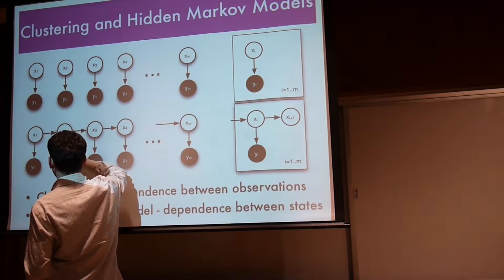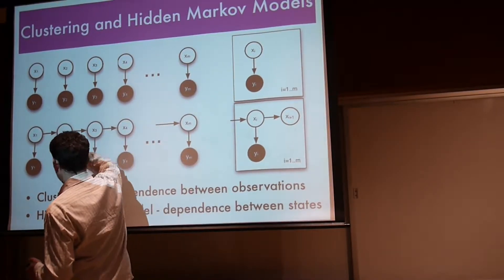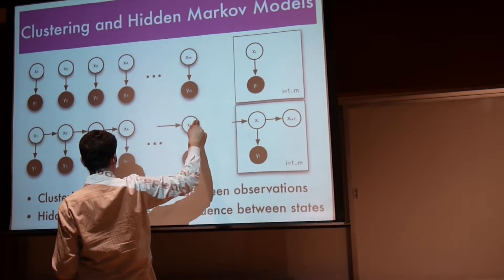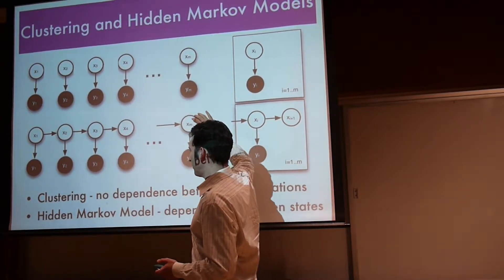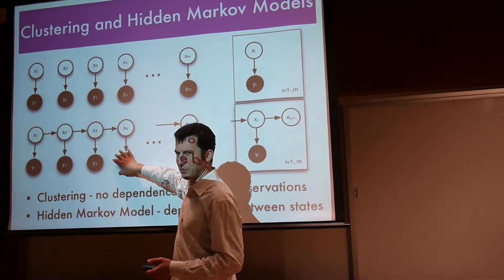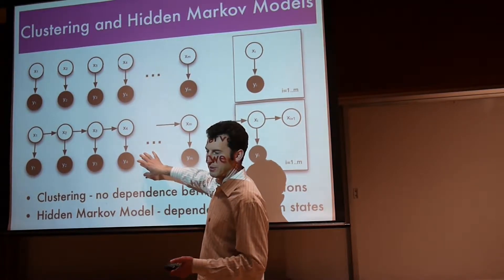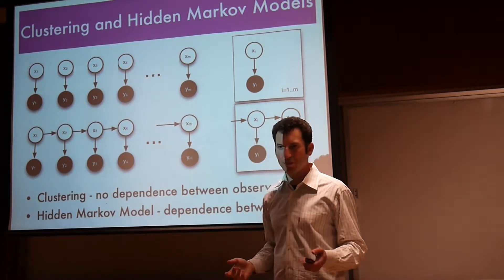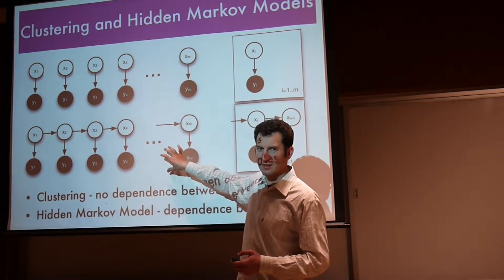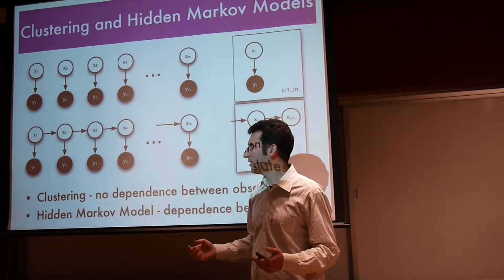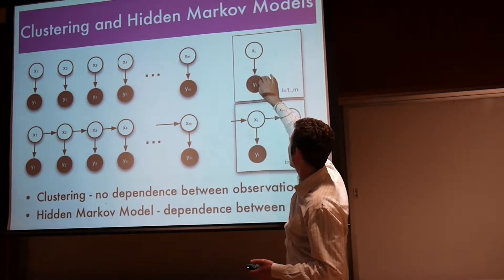In a hidden Markov model, all I'm assuming is that I can line up those unknown latent variables in a sequence, and that they actually depend on each other in that sequence. That's really the only difference that I'm going to make to simple clustering.